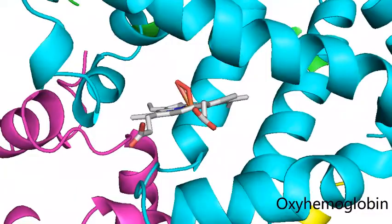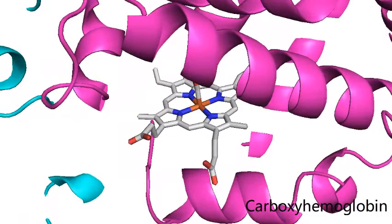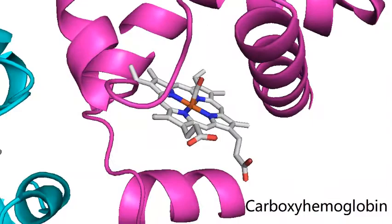Iron can also bind to other molecules such as carbon monoxide to form carboxyhemoglobin. Carbon monoxide binds very strongly to heme and this is a big problem because once it binds it doesn't want to come off.